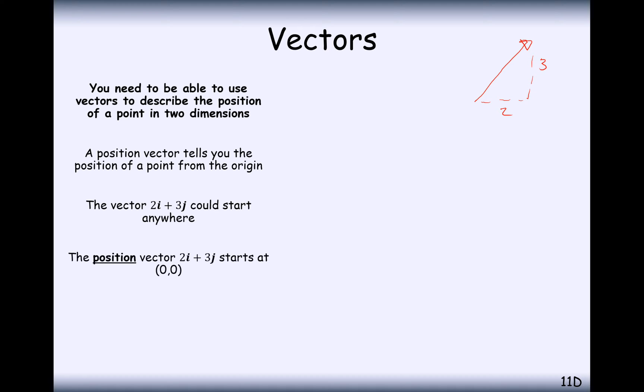However, the position vector, the position vector 2i plus 3j, definitely starts at the point 0, 0, so it effectively takes you from the origin to the coordinate 2, 3. So think of position vectors as coordinates 2i plus 3j.